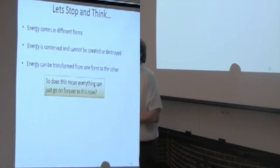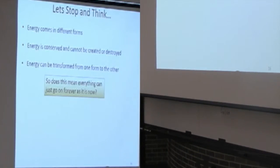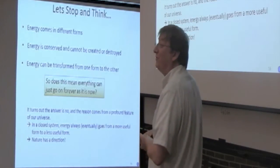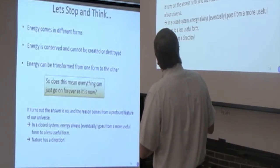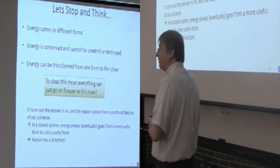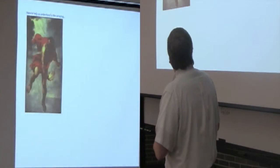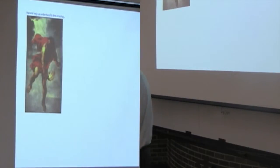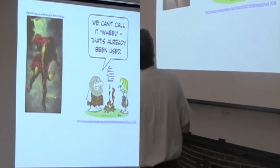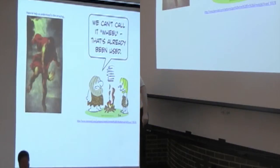Okay. It's 10 degrees. All right. So, stop and think now. And then we're going to, wow, that goes faster. Energy comes in different forms. It's conserved. It can't be created or destroyed. It can be transformed from one to the other. We've seen circles in terms of, for example, the water cycle. Does this mean everything can just go on forever as it is now? No. What do you think? Entropy. Entropy. Entropy. Ah. Somebody says entropy. Does entropy mean something to everybody? I see a few nods. Does it not mean something to anybody? Did somebody say nods? I'm going to talk about it. All right. So, the answer is no. And the reason for this comes from a profound feature of our universe.